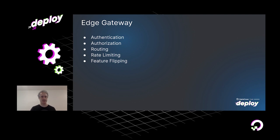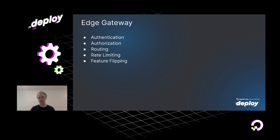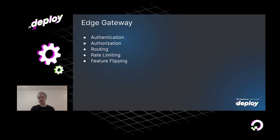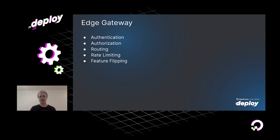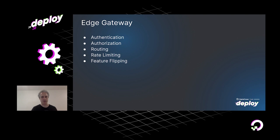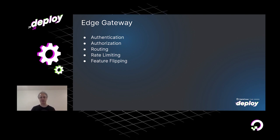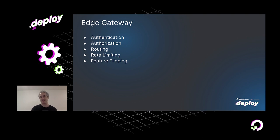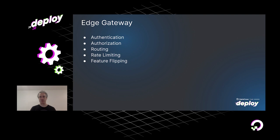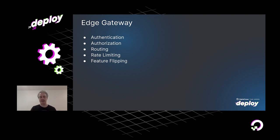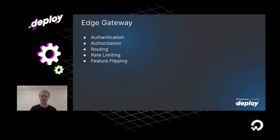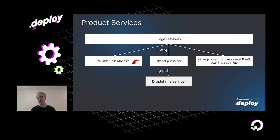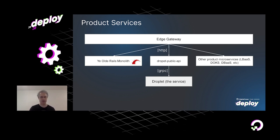The Edge Gateway is effectively our internal API gateway. It provides a consistent surface that can be invoked to route to various backing microservices. It was first put in place when the entire front end was built on Rails, and we needed a graceful way to evolve out of that monolith into the microservice architecture we live in today. It also provides common functionalities such as authentication, authorization, rate limiting, and feature flipping. In the case of v2 droplets, we're passed to a service called the Droplets Public API.